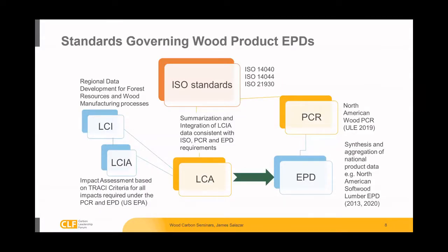All of these EPDs are based on a whole background of standards and methodology guidelines. All of the major EPD programs have adopted ISO 21930 as their guiding standard. ISO 21930 is really the ubiquitous product category rules for all construction products EPDs in North America, and it actually has very specific biogenic carbon accounting guidelines. That's what's been adopted by the North American product category rules published by Underwriters Laboratory.